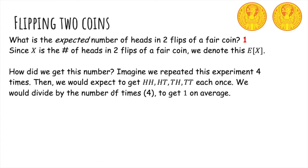So then we could just divide by the number of times that we flipped, four, to get one on average. So two plus one plus one plus zero over four.